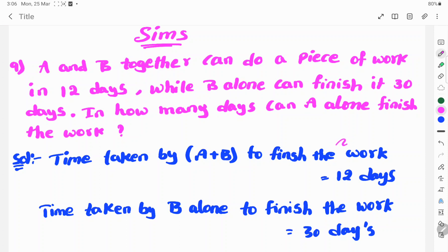Here A and B together finish work in 12 days, but B alone can finish the work in 30 days. We need to find A's work alone. So let's see the solution.